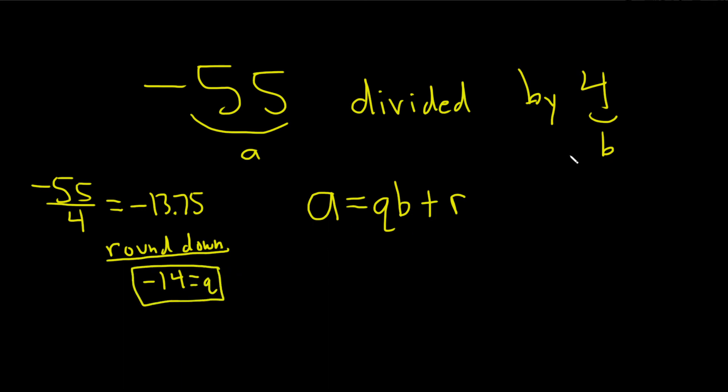Now let's plug it into the formula. So A is negative 55, Q is negative 14 times B, which is 4. So I'll put the 4 there. Plus, let's figure out R.